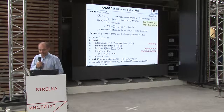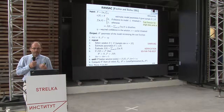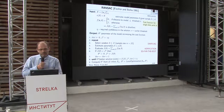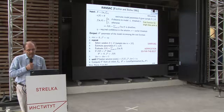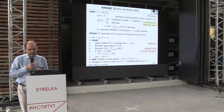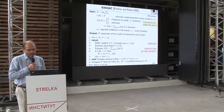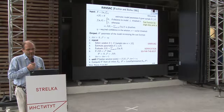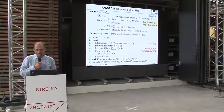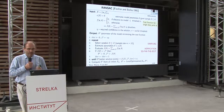One very nice property of RANSAC is that it gives a probabilistic guarantee: given your chosen confidence eta, the cardinality of the dataset, the current best cost J-star, and the number of iterations, you know the probability that a better solution exists. After finishing the loop, you take your inliers and polish the solution with local optimization such as least squares.